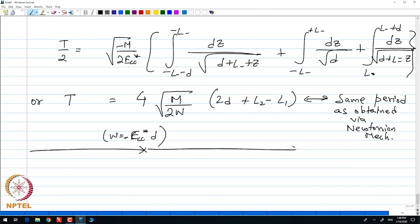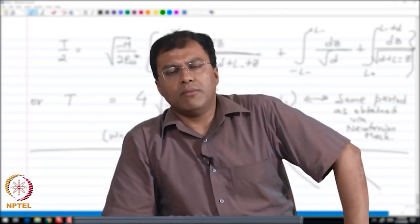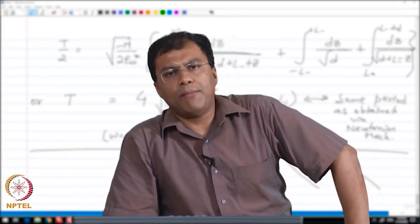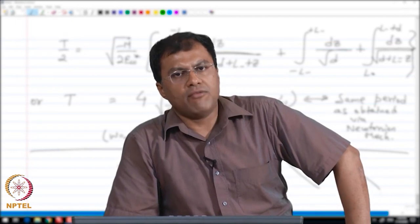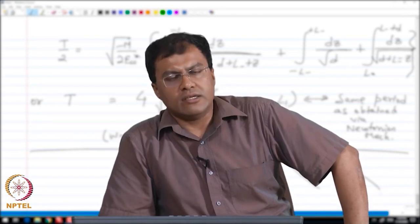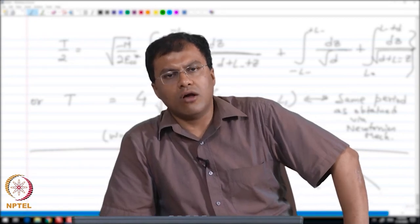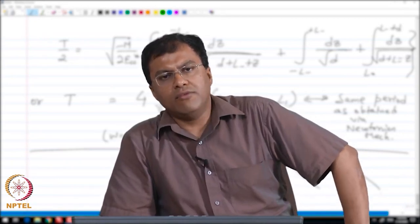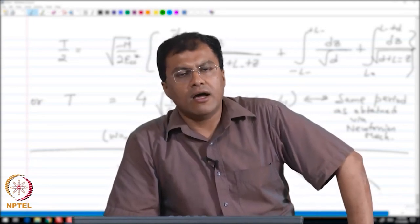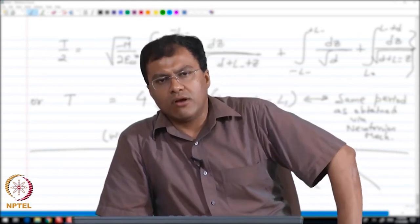That completes my description of the Hamiltonian formulation of these nano rod oscillators. I hope that the students have learned in this course, starting from the basic theory of calculus of variations, how to apply this theory in optimal control problems, and finally how to look at the motion of carbon nano rods in various situations. I hope students have learned quite a few tricks to solve problems involving calculus of variations with specific applications in optimal control and nano mechanics. Thank you very much for listening.